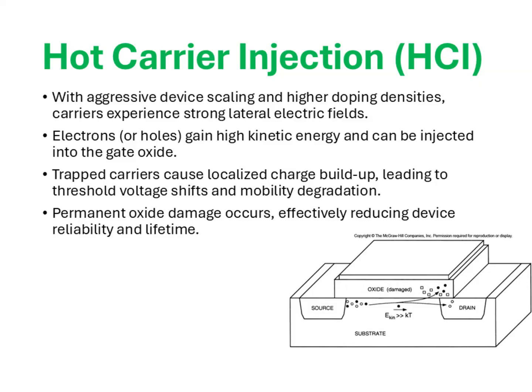Once injected, these carriers may become trapped in the oxide, leading to the accumulation of localized charges. This trapped charge alters the electrostatics of the device, resulting in threshold voltage shifts, reduced channel mobility, and overall degradation in current drive. Unlike temporary fluctuations, this phenomenon introduces permanent damage to the oxide, as the injected carriers effectively modify its insulating properties — almost as if the oxide has been doped to behave like a weak conductor. This makes hot carrier injection a major reliability concern in nanometer MOSFETs, as it progressively degrades performance over time, shortening the effective lifetime of the transistor.